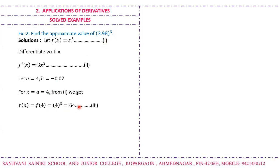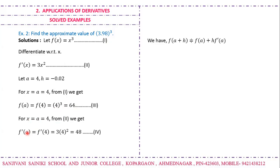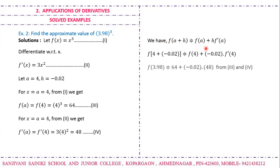We find f(a) = f(4) = 4³ = 64, and f'(a) = f'(4) = 3 × 4² = 3 × 16 = 48. Using the approximation formula f(a+h) ≈ f(a) + h·f'(a), we get 64 + (−0.02)(48) = 64 − 0.96 = 63.04. So (3.98)³ ≈ 63.04.